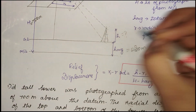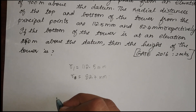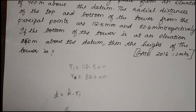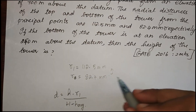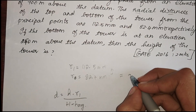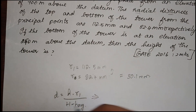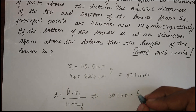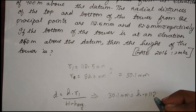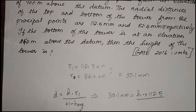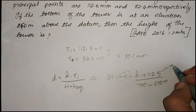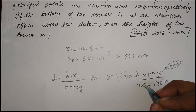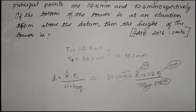Using the relief displacement formula: d equals height of tower times r1 divided by (H minus h_average). The relief displacement d equals r1 minus r, which is 112.5 minus 82.4 equals 30.1 mm. Substituting: 30.1 mm equals height of tower times 112.5 mm divided by (700 minus 250) meters. Note that the millimeter units appear on both sides, so they cancel.